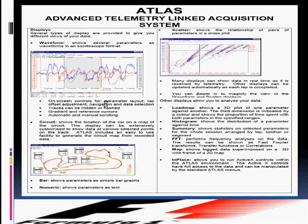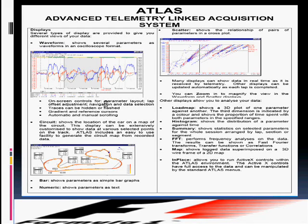The scatter display shows the relationship of pairs of parameters in a cross plot. As well as these, there are some kinds of load maps, FFD map, and in-place displays.